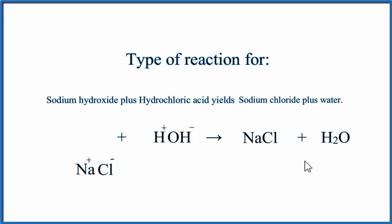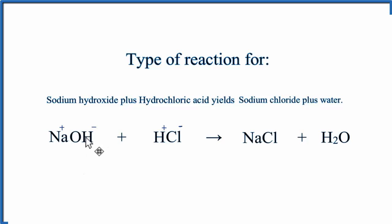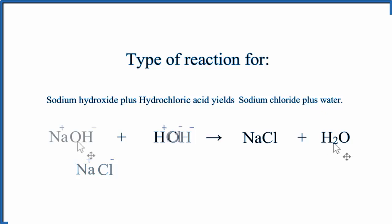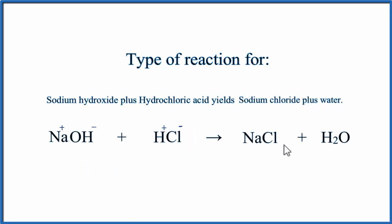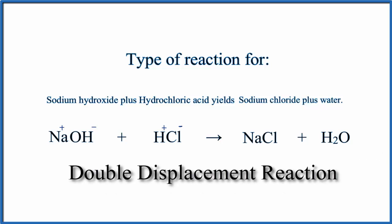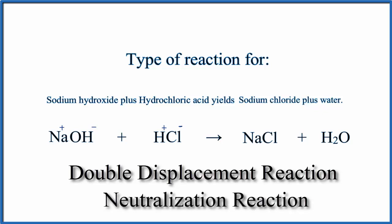So that's a double displacement reaction where the positives and the negatives switch places. For the reaction sodium hydroxide plus hydrochloric acid yields sodium chloride plus H₂O, it's both a double displacement and a neutralization reaction. This is Dr. B with the type of reaction for NaOH plus HCl. Thanks for watching.